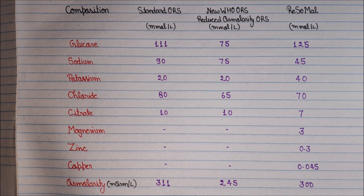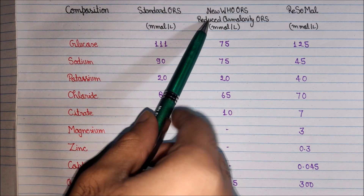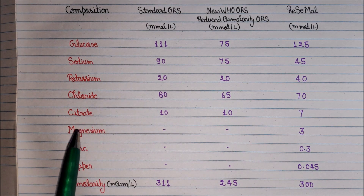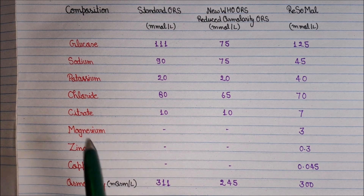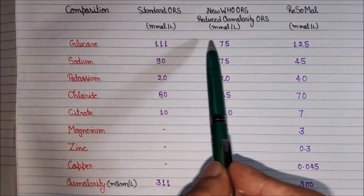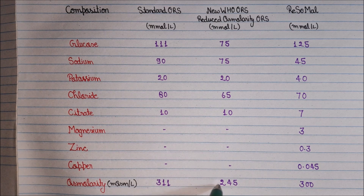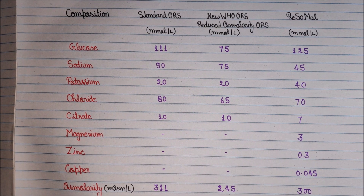There are three types of ORS solutions. The first is the standard ORS, which has a total osmolarity of around 311 milliosmol per litre. Nowadays, we use the new WHO ORS, which is the reduced osmolarity ORS. In this table we can compare both standard ORS and new WHO ORS, as the osmolarity is reduced to 245 milliosmol per litre.